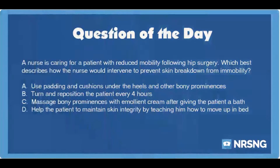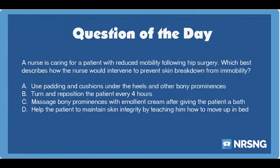The nursing category is musculoskeletal. The NCLEX category is basic care and comfort. A nurse is caring for a patient with reduced mobility following hip surgery. Which best describes how the nurse would intervene to prevent skin breakdown from immobility?